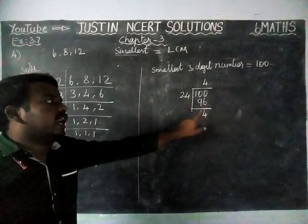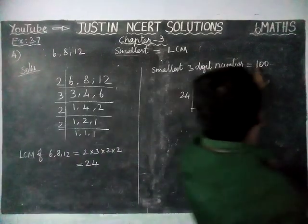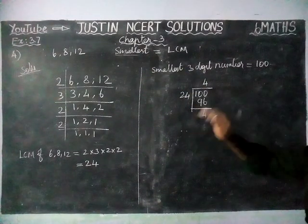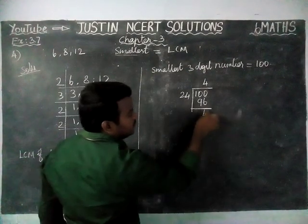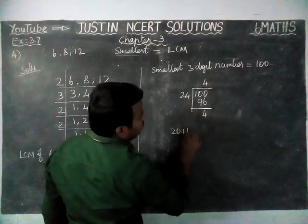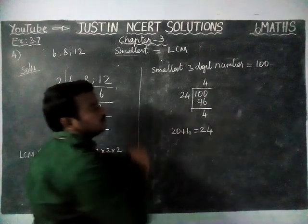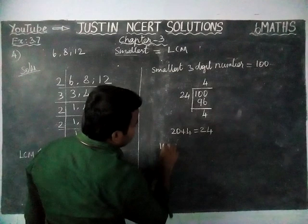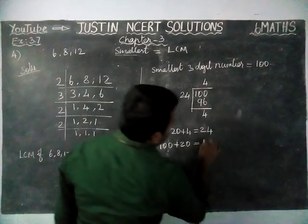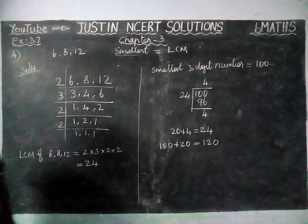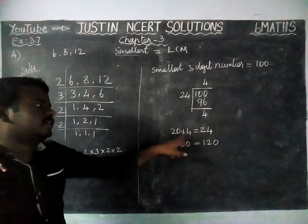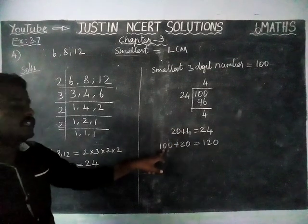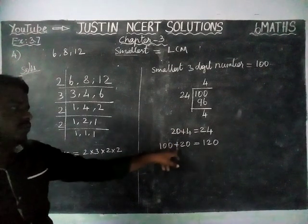Here, the remaining is 4. We need to find the smallest three-digit number which is divisible by 6, 8, and 12. So, if we add 20 to 4, we get 24. Since 24 is divisible by 24, we add 20 to 100. Therefore, 100 plus 20 is equal to 120. The required smallest three-digit number is 120.